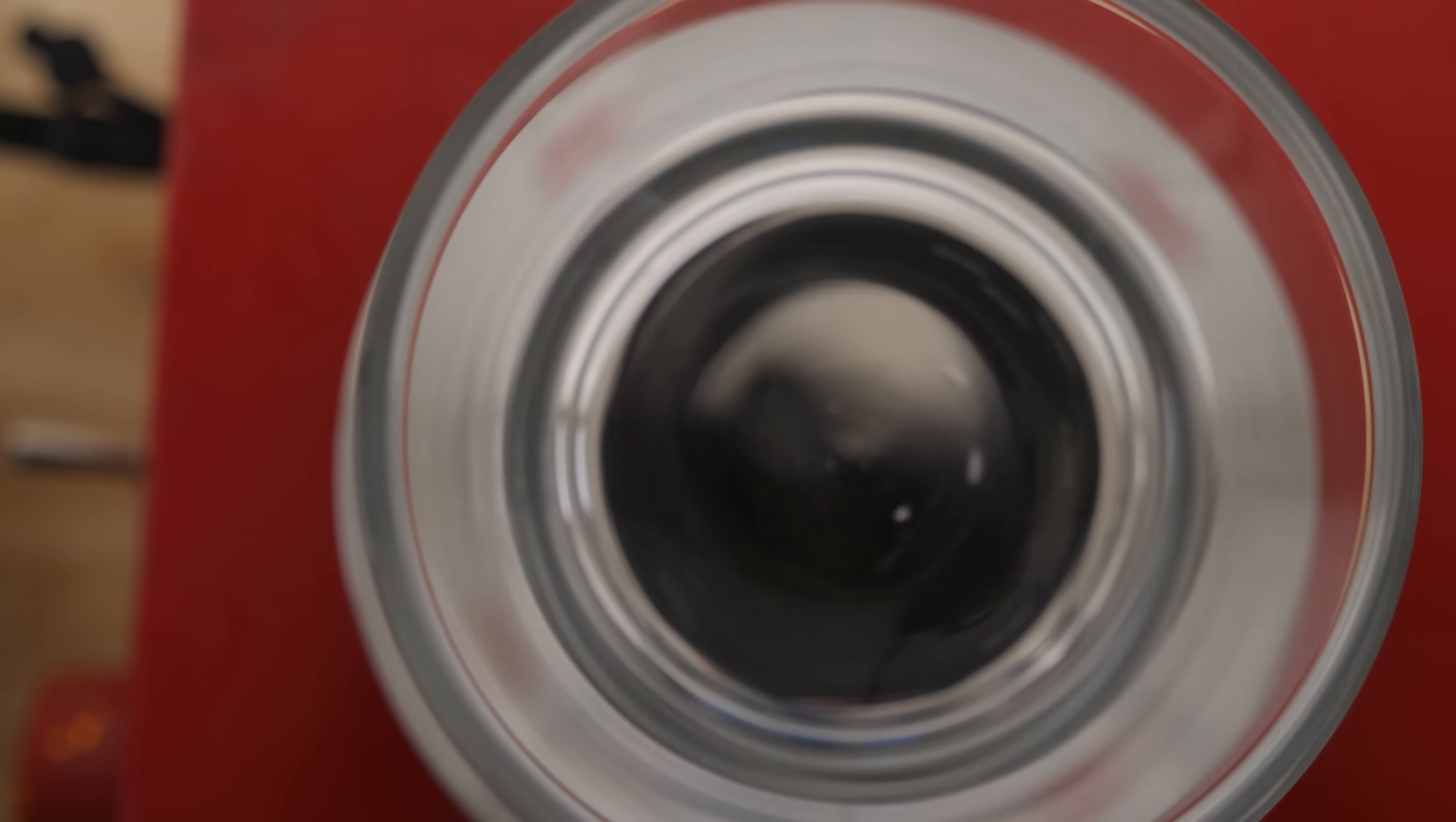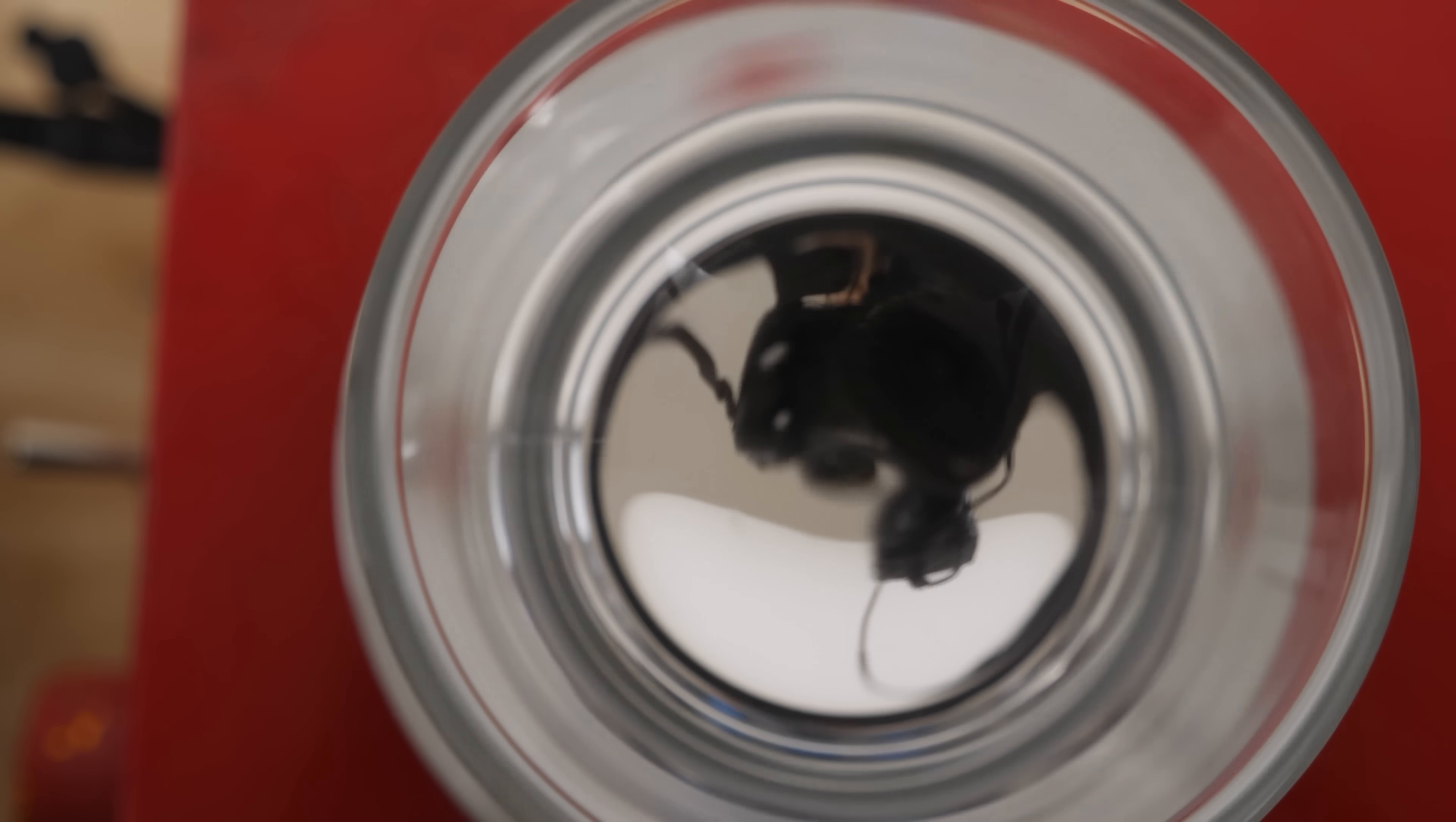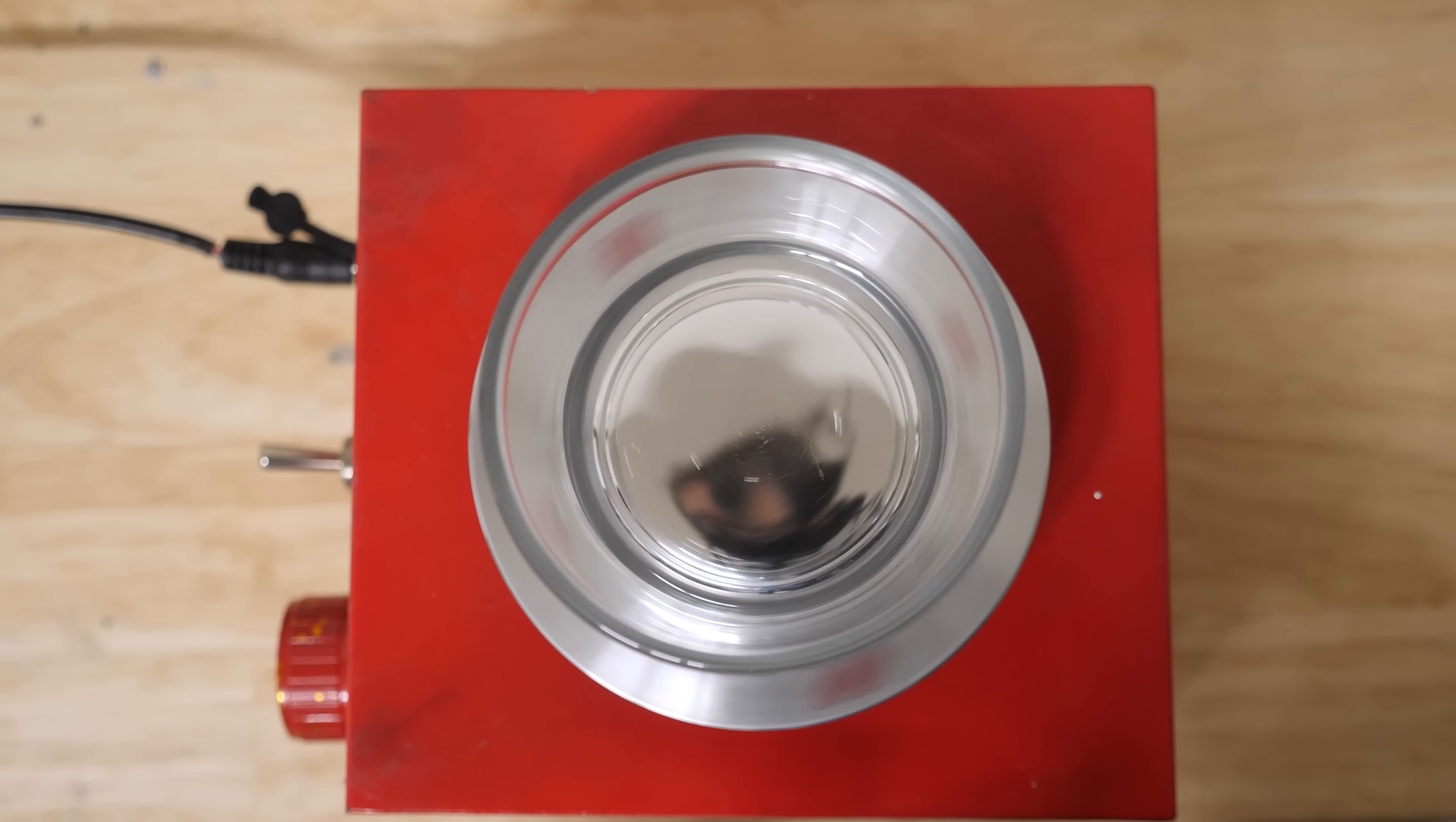As I start to spin the gallium, watch how the image goes from a flat reflective image of the camera to a distorted image of me looking through the camera. This tells us that the focal length has moved far from the gallium and the faster I spin it the smaller my image gets. Look at this, it works.